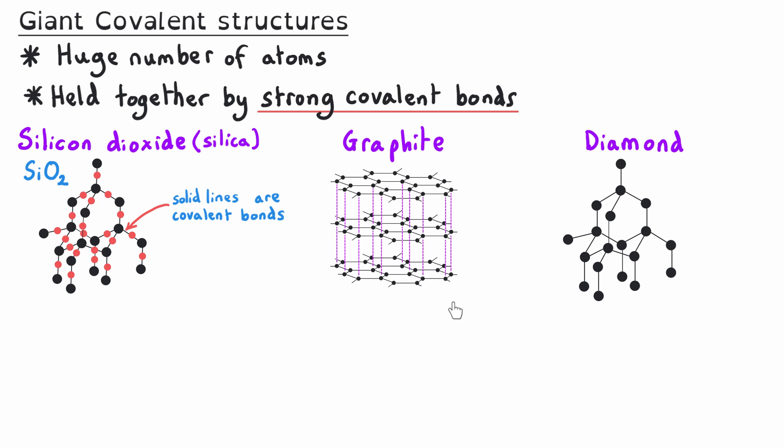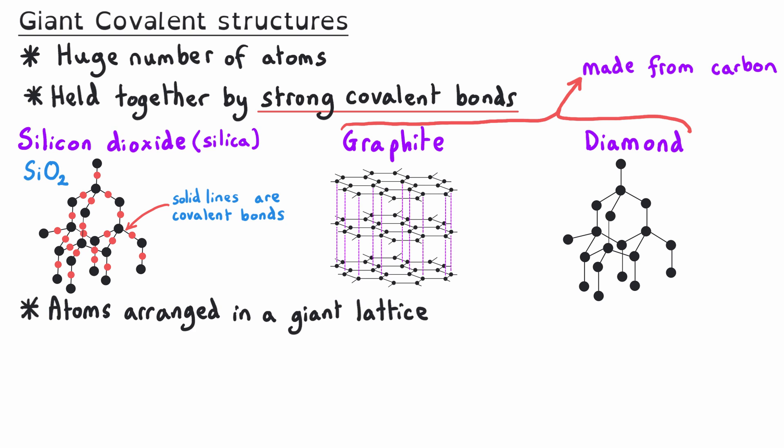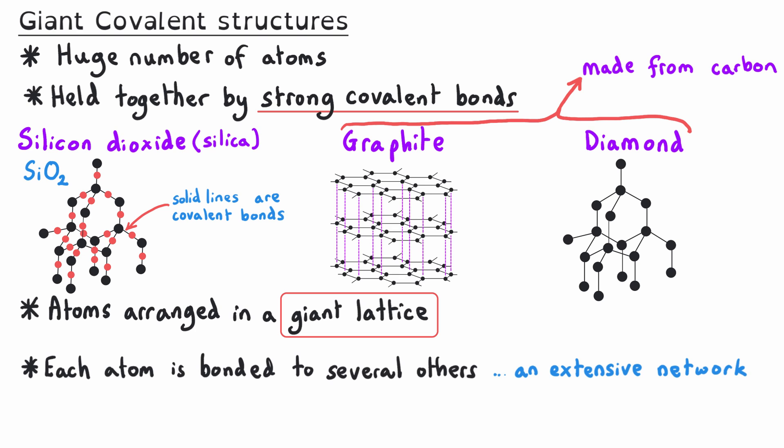We also have graphite and diamond, both of which are giant covalent structures made from carbon. The atoms in a giant covalent structure are arranged in a giant lattice — giant referring to the huge number of atoms, and lattice referring to a regular repeating pattern. In this giant lattice, each atom is bonded to several others in an extensive network. When we get to the edges of a diagram, it isn't always obvious that this continues, but you are just seeing a small snapshot of a larger structure.